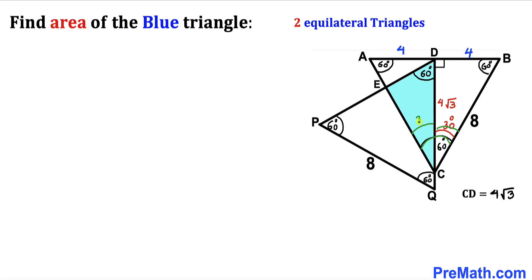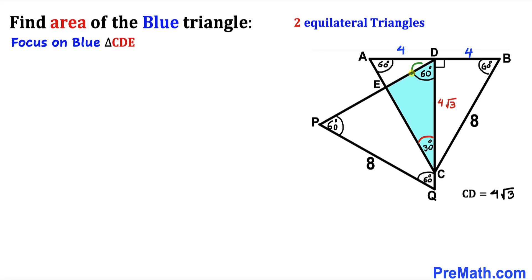Now let's focus on blue triangle CDE. We know one angle is 60 degrees and another is 30 degrees, so the remaining angle must be 90 degrees. Therefore triangle CDE is a right triangle, and we need to find side lengths ED and EC to calculate its area.